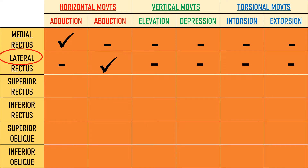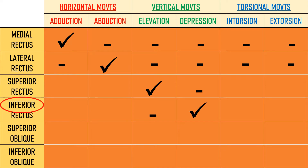The most confusing muscle actions for most students are those of the superiors and the inferiors. Just like medial rectus and lateral rectus act according to their names, superior rectus and inferior rectus also follow what their names suggest. Superior rectus causes elevation, moving the eye superiorly, and inferior rectus causes depression, moving the eye inferiorly.